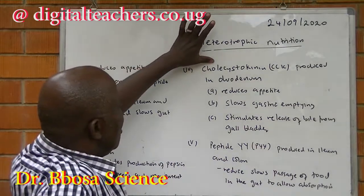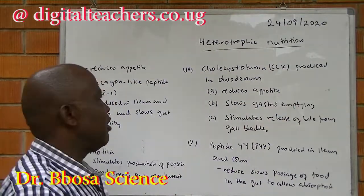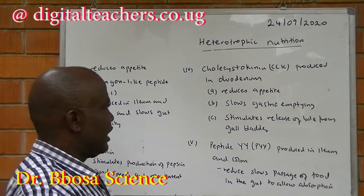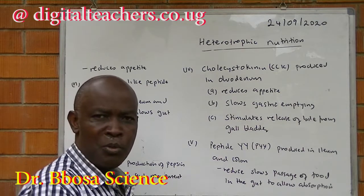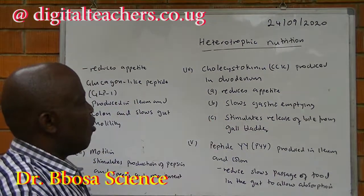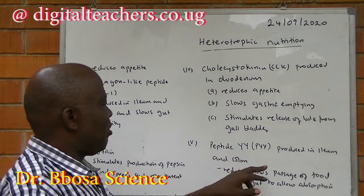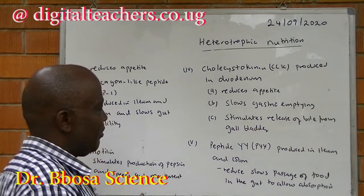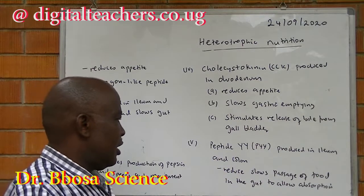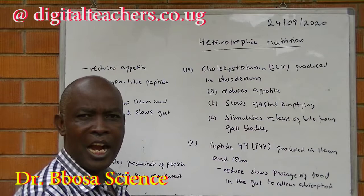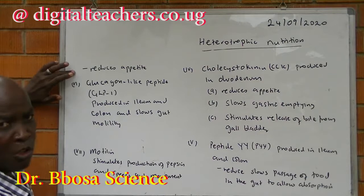Peptide YY (PYY) is produced in the ileum and colon. It stimulates the release of bile from the gallbladder and slows gut movement to allow absorption of food.